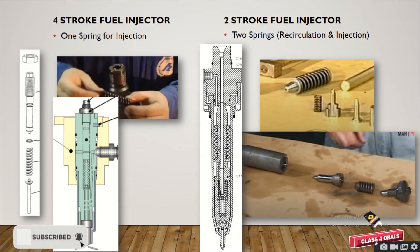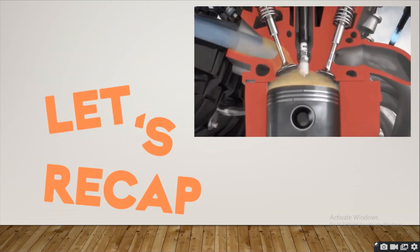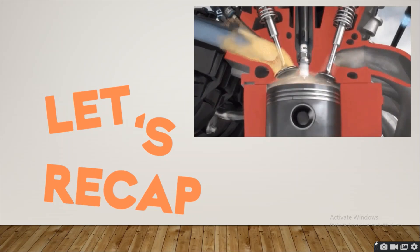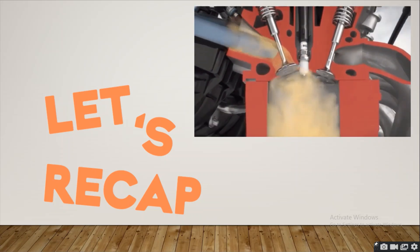On the left you will see there is one spring in the 4-stroke fuel injector, and that is for the injection purpose. Whereas on the right side you will see there are two springs in the 2-stroke fuel injector, for the recirculation and injection purposes respectively. So guys, let us have a quick recap of what we have just discussed.